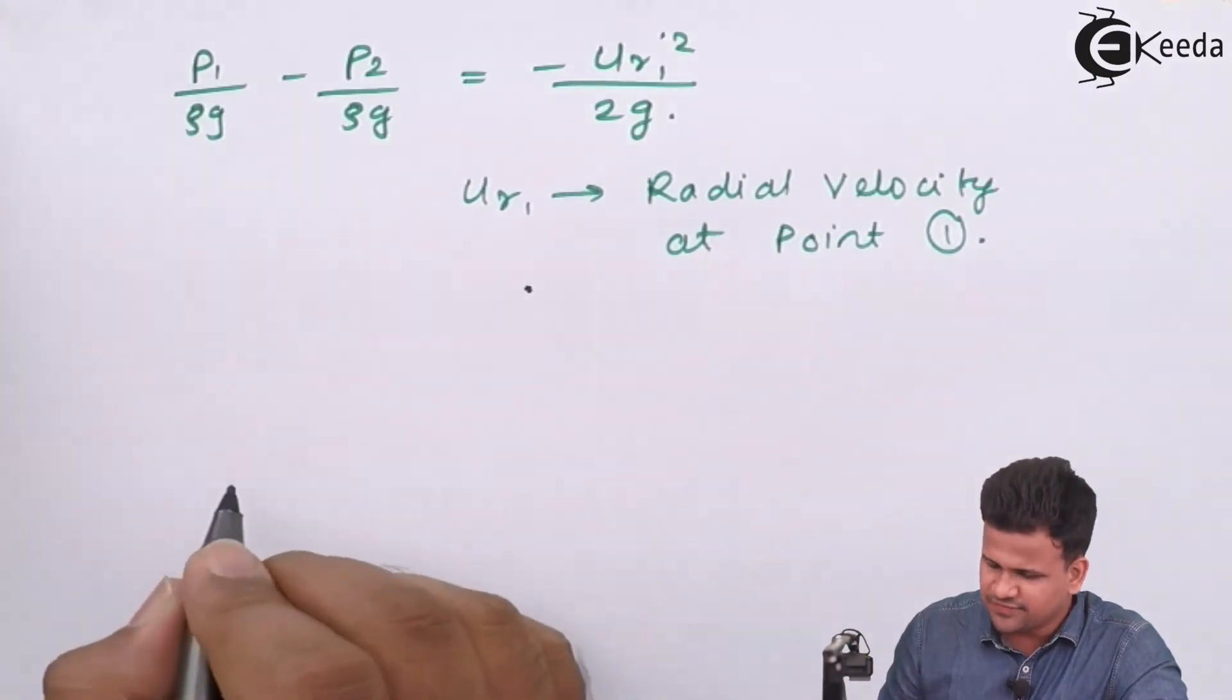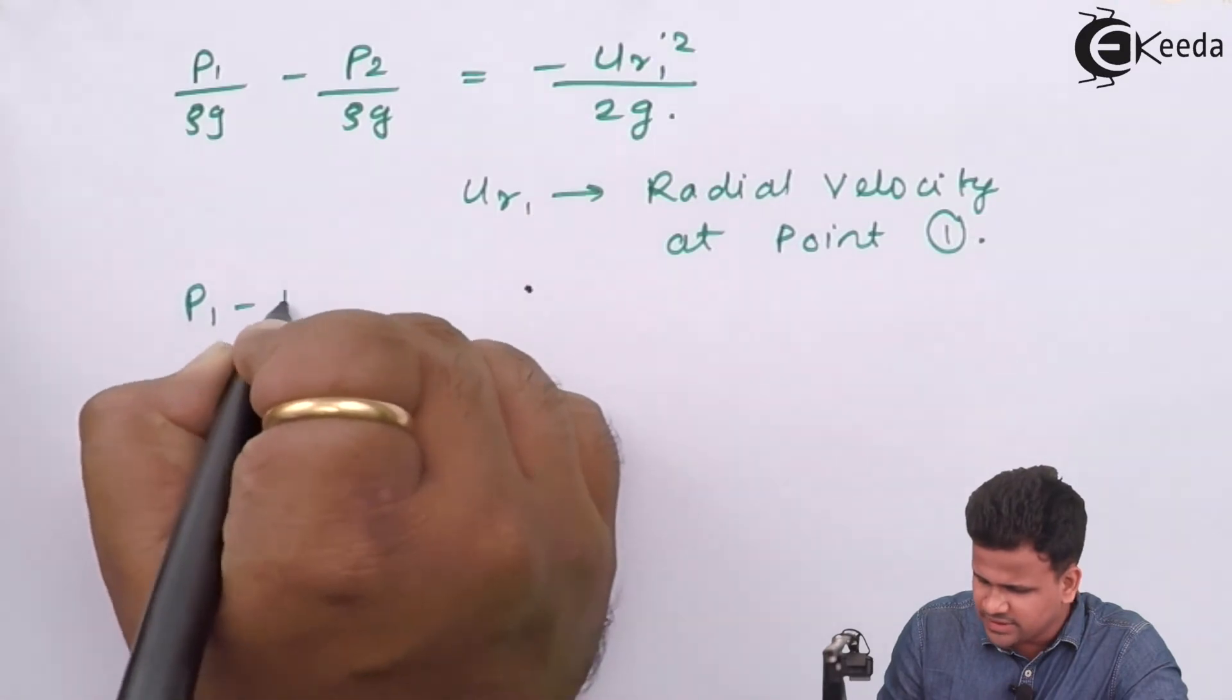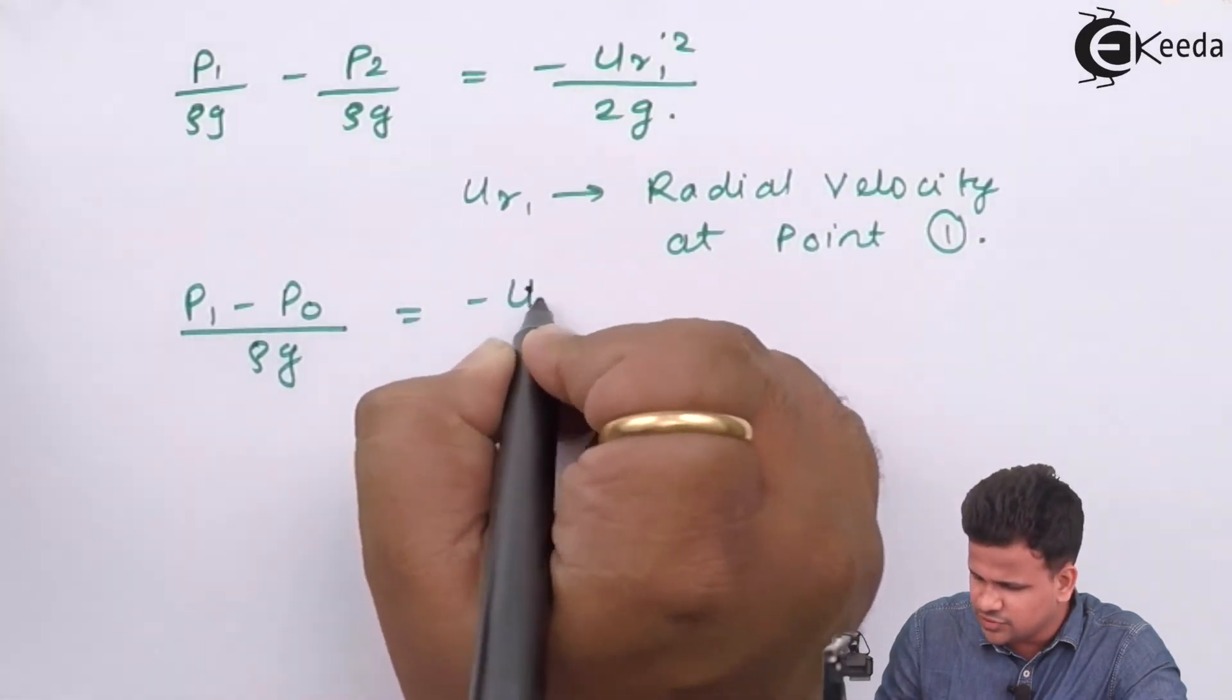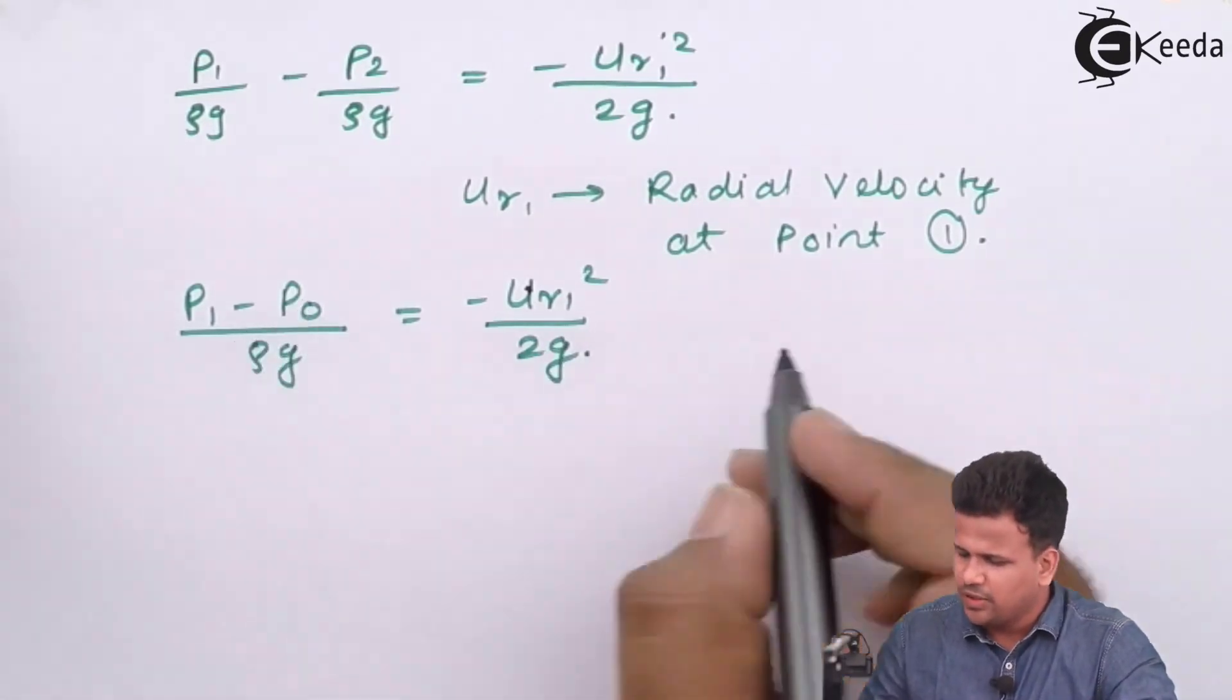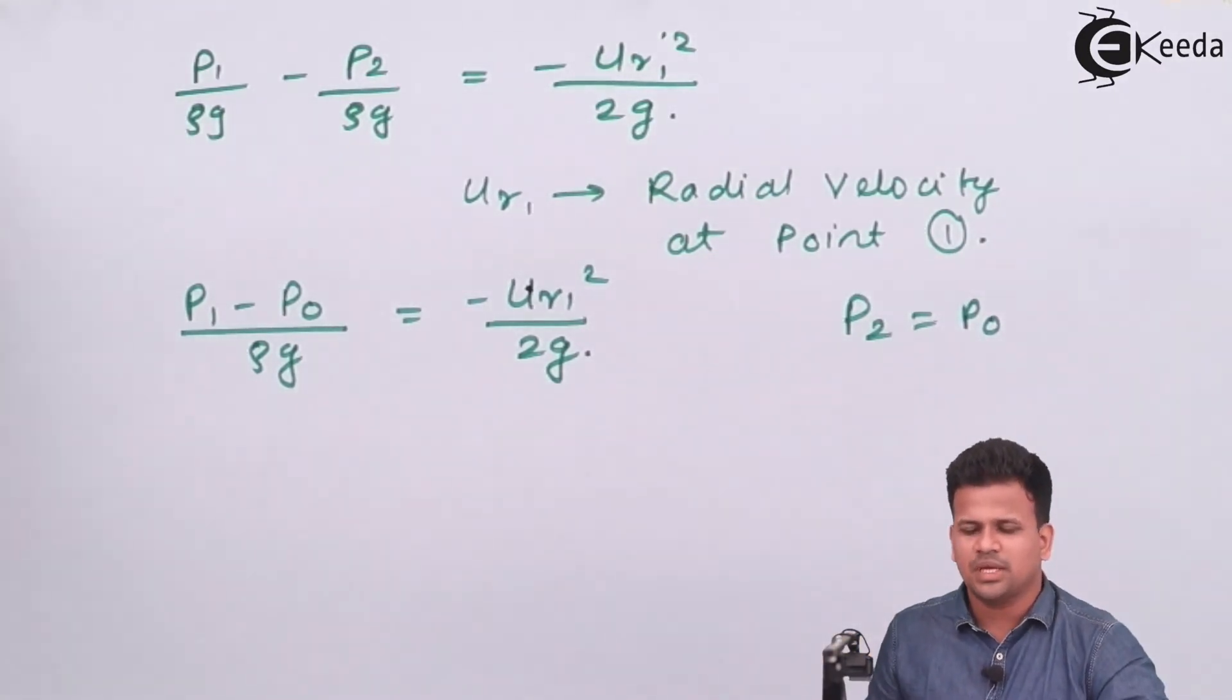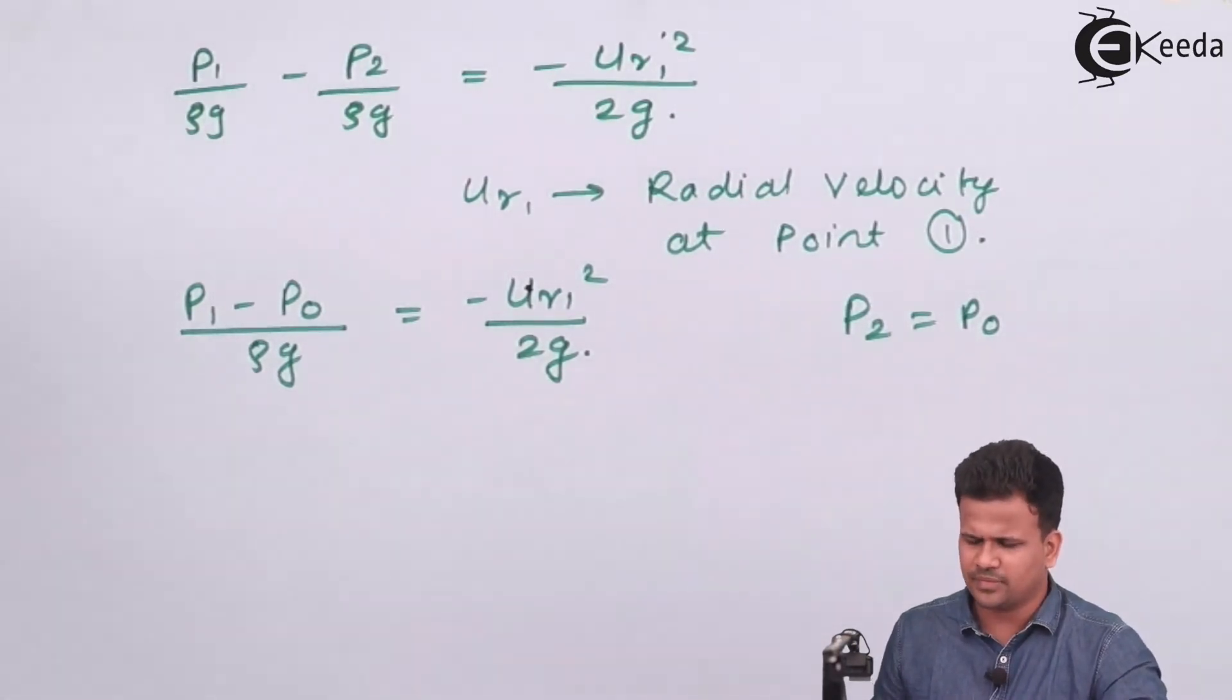Now as it travels further, the pressure p1 minus p0/(ρg) equals -ur1²/(2g). Over here, pressure p2 equals p0 because it is the atmospheric pressure—the atmospheric pressure applied on the liquid.